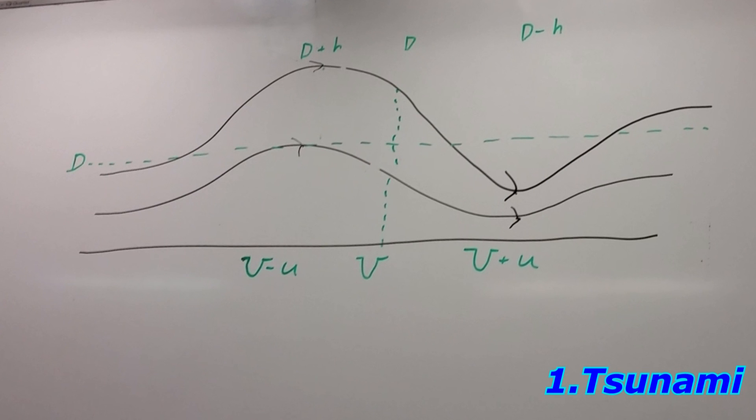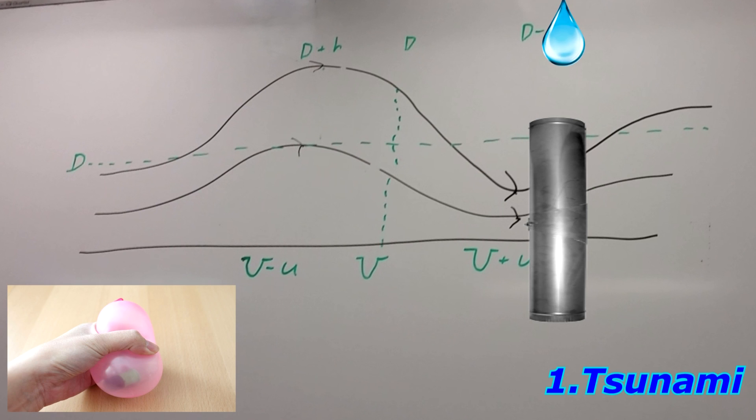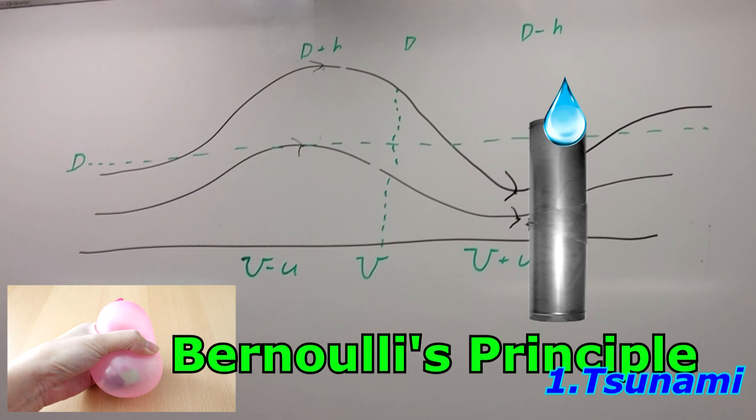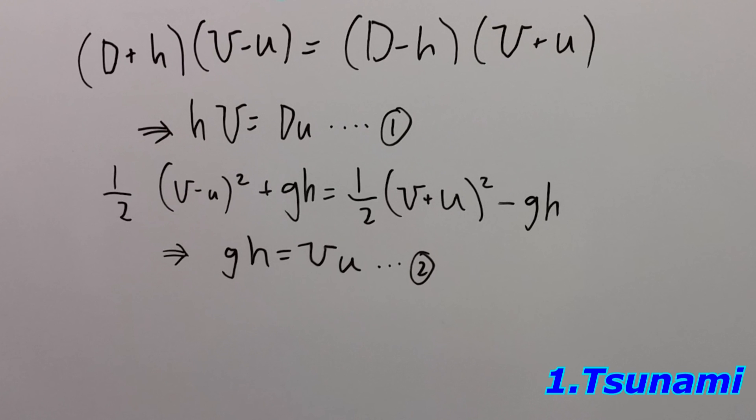Since the wave maintains the same shape, we can consider it to be a system similar to water in a pipe or a water balloon. Hence, we can apply Bernoulli's equation to it. We can neglect pressure since the density of air is much less than that of water, meaning a constant pressure throughout the wave. Using Bernoulli's equation, we equate the energy of the crest and trough using the flow speed on the diagram. We get this relationship.